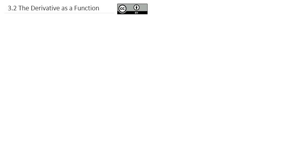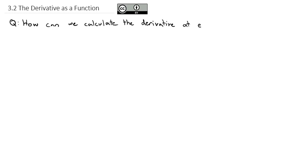In our previous lesson, we talked about how we could find the derivative at a specific point. But today, we're going to extend that discussion and answer the question of how can we calculate the derivative at every point. We are going to expand our definition of the derivative to look at it as a function, instead of just calculating the slope of the tangent line at a specific point.